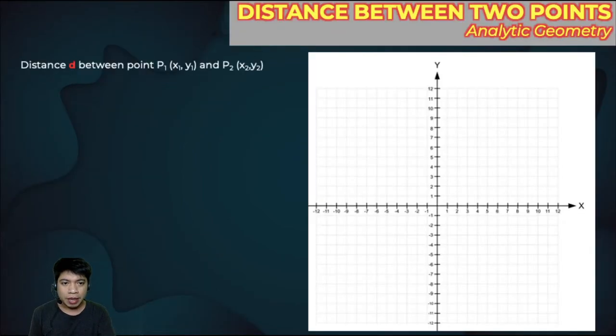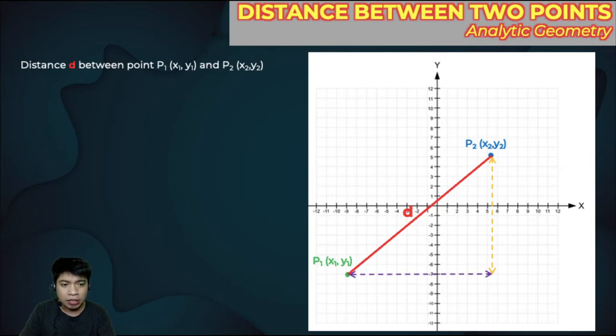For example, if we want to know the distance, the direct distance between two points P1 and P2, this is point 1 with coordinates x1 and y1, and we have another point, point 2, with coordinates x2 and y2. If we want to know the distance between these two points, we have to know the vertical distance and the horizontal distance of these two points.